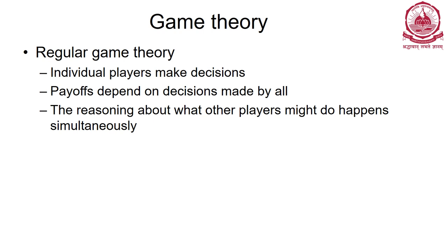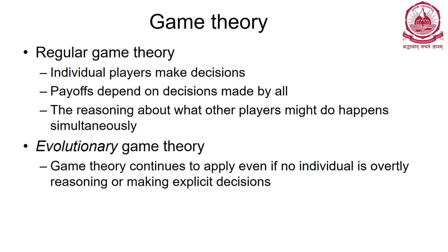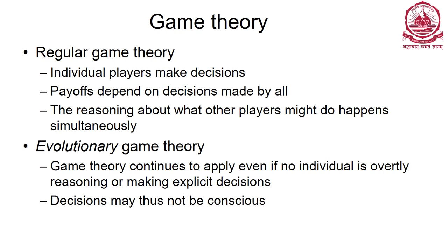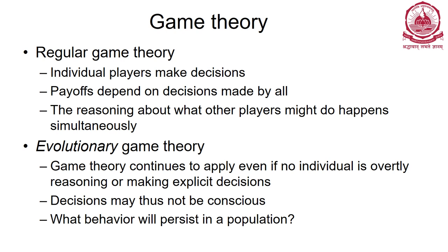In regular game theory, reasoning about what other players might do happens simultaneously. In evolutionary game theory, game theory continues to apply even if no individual is overtly reasoning or making explicit decisions. The key difference is that in a regular game, a player makes a decision by looking at the environment and possible strategies. In an evolutionary game, one's gene determines the strategy - no explicit decision is made.